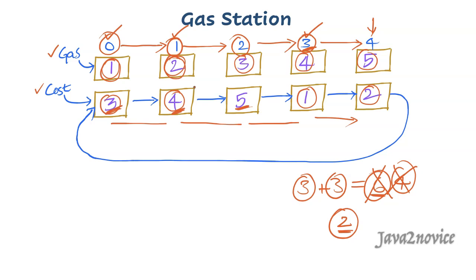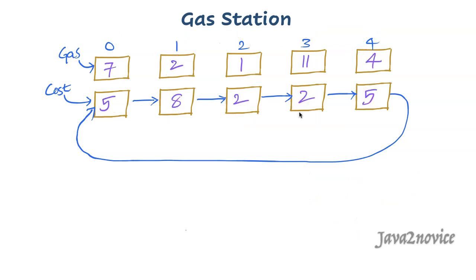Now let's discuss the logic. We will jump directly into the optimal solution. The naive approach uses two nested for loops — the outer loop tracks the starting point and the inner loop iterates over the array to complete the trip. We know that is O(n²) time complexity, but we are looking for O(n) time complexity.